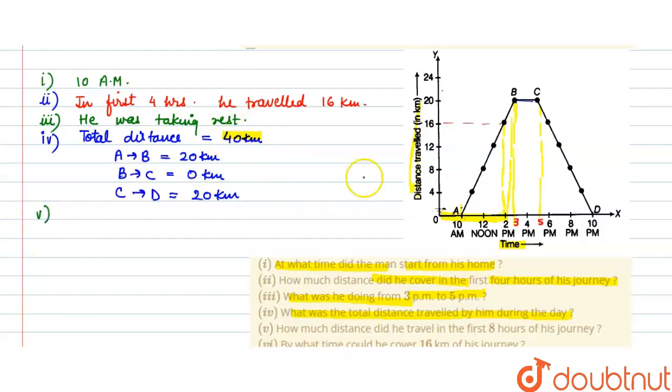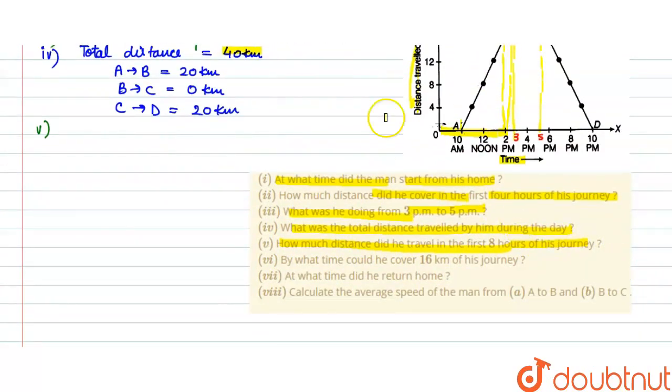Now, fifth part of the question. How much distance did he travel in the first 8 hours of the journey? First 8 hours of the journey, let's see. It is clear that he traveled a total of, first 8 hours means 10 AM to 6 PM, 24 km of distance he traveled.